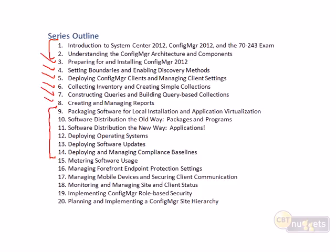We go through all the different areas in which change can be enacted on clients — how to prepare packages, how to generate packages deployable with Config Manager or through AppV, and how to distribute them via packages and programs or the new applications model. Once we understand software distribution, next up are operating systems, software updates via WSUS, compliance baselines, and then more incidental topics: metering software usage, security settings, mobile devices, and managing client and site statuses. We conclude with number 20, where we expand from a single server and single site hierarchy out to a national, multi-site, or even global organization.